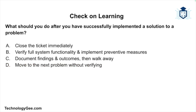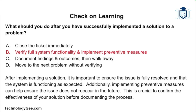The final question: what should you do after successfully implementing a solution — close the ticket immediately, verify full system functionality and implement preventative measures, document findings then walk away, or move on without verifying? The correct answer is verify full system functionality and implement preventative measures. After implementing a solution it's important to ensure the issue is fully resolved and the system is functioning as expected. Preventative measures help ensure the issue does not reoccur, and this should happen before documenting the process.